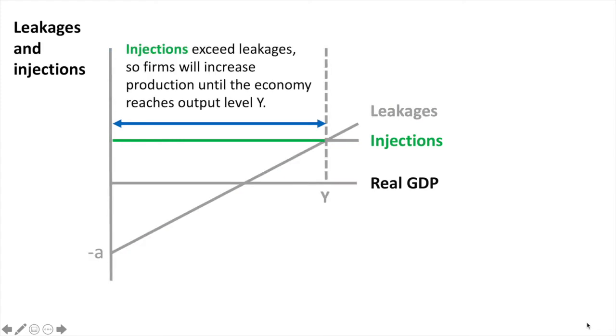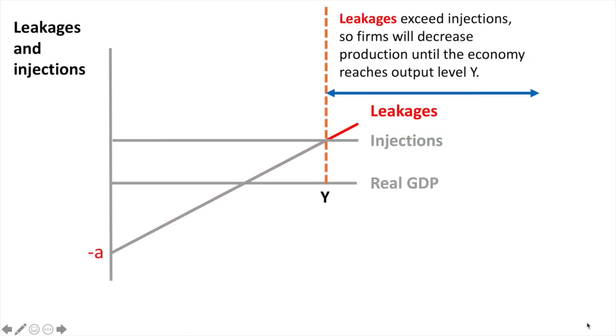Before Y, injections exceed leakages so firms will continue to increase production until the economy reaches output level Y. Beyond Y, leakages exceed injections so firms will decrease production until the economy reaches output level Y.